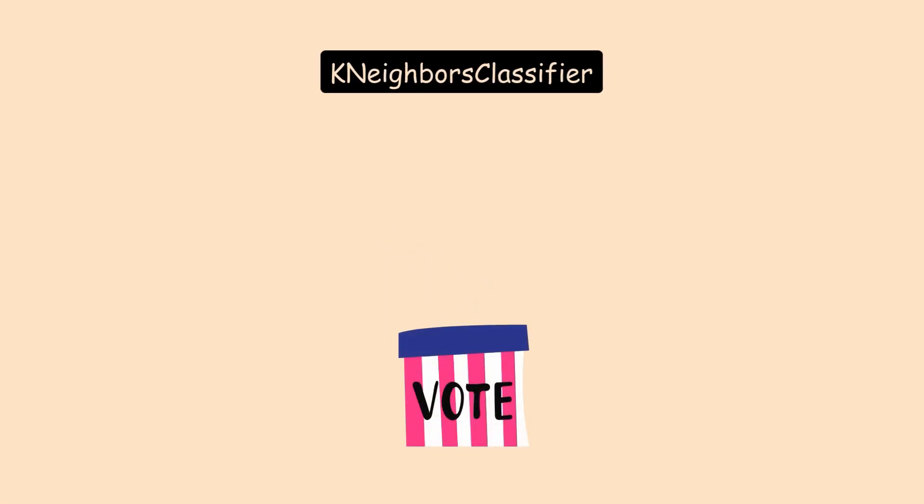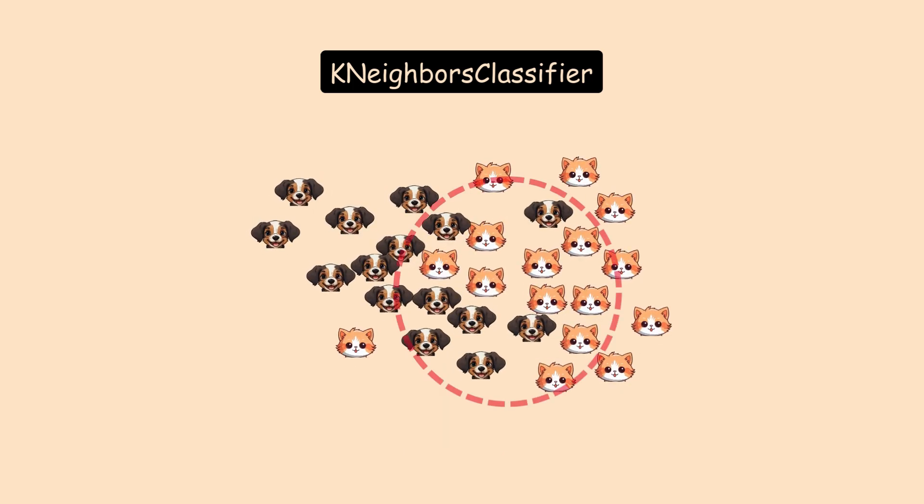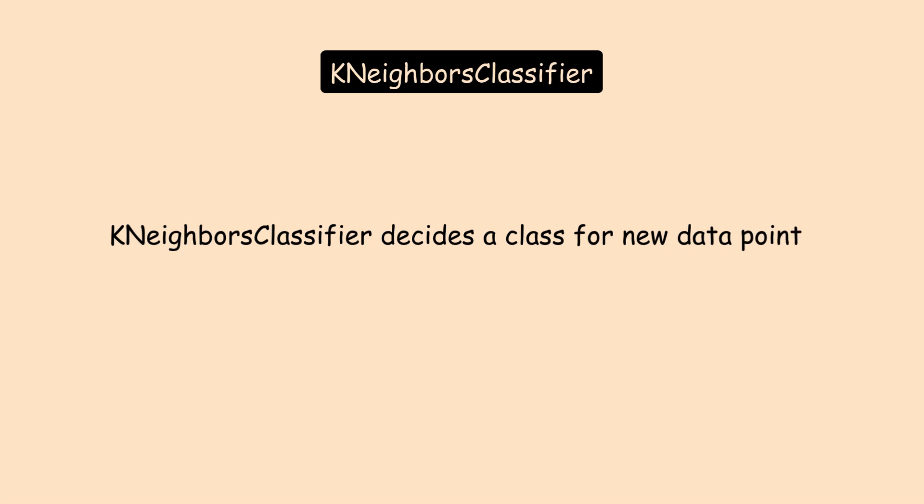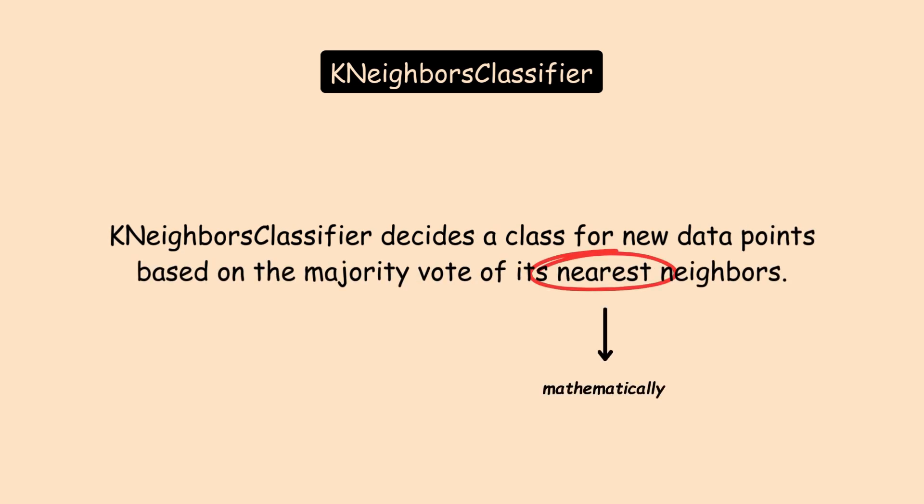Have you ever voted for someone? That's pretty much how classification is done using the K-neighbor classifier, by voting. It decides a class for new data points based on the majority vote of its nearest neighbors. And when we say nearest, we're talking mathematically closest.